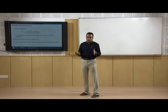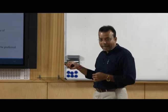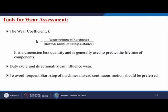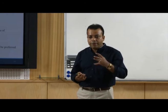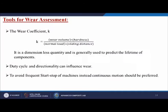To measure the amount of wear taking place, the wear coefficient, denoted by k, equals wear volume times hardness divided by the normal load and sliding distance. It is a dimensionless quantity generally used to predict the lifetime of a component. When designing any product, by keeping all these values we can calculate the wear rate of that material, and duty cycle and directional considerations can influence wear — continuous motions should be preferred over frequent start-stops of machines.